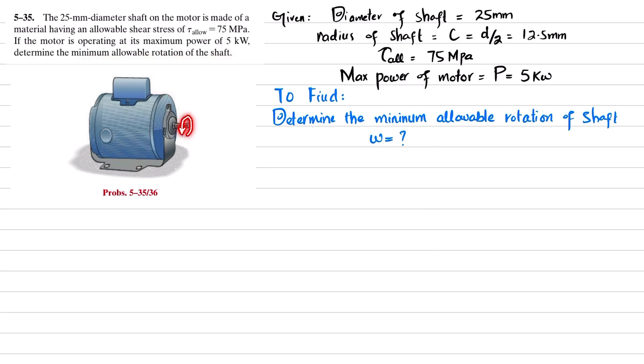The diameter of the shaft is 25 millimeters, while the radius of this shaft, c, is equal to d by 2, so 25 divided by 2 is 12.5 millimeters. The maximum allowable shearing stress is 75 megapascals, and the power of this motor is 5 kilowatts.